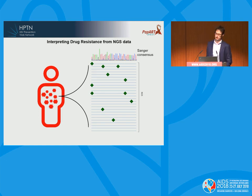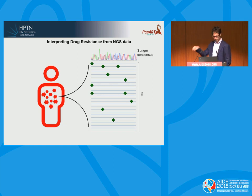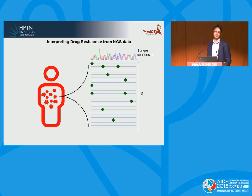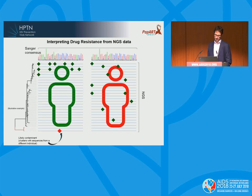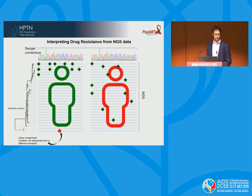Next-generation sequencing gives you better information on drug resistance within an individual. Each line represents a sequence of a single virus particle. The little squiggly bit on top is the sum of all mutations — that represents a Sanger consensus sequence. If you compare two individuals with exactly the same mutations at the same places, but in one individual all mutations are clustered on individual virus particles, those particles are much more resistant than the virus sampled from the other individual.